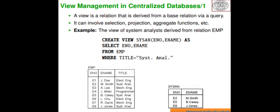Here we are creating a new derived virtual table called sysan with fields eno and ename, with the condition where title is 'sysanl'. The single effect of this statement is the storage of the view definition in the catalog — no other information needs to be stored. Therefore, the result of the query defining the view is not produced; however, the view system can be manipulated as a base relation.